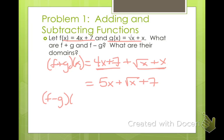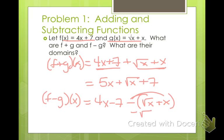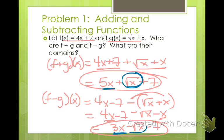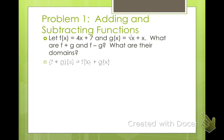For f minus g of x, that just means we're taking f of x, 4x plus 7, and subtracting the quantity square root of x plus x. We need to distribute this negative through, so it's minus square root of x minus x. So 4x minus x is 3x, minus square root of x, plus 7. Now for the domain — looking at the square root of x, x cannot be negative to keep a real number. So the domain for both is x greater than or equal to 0.